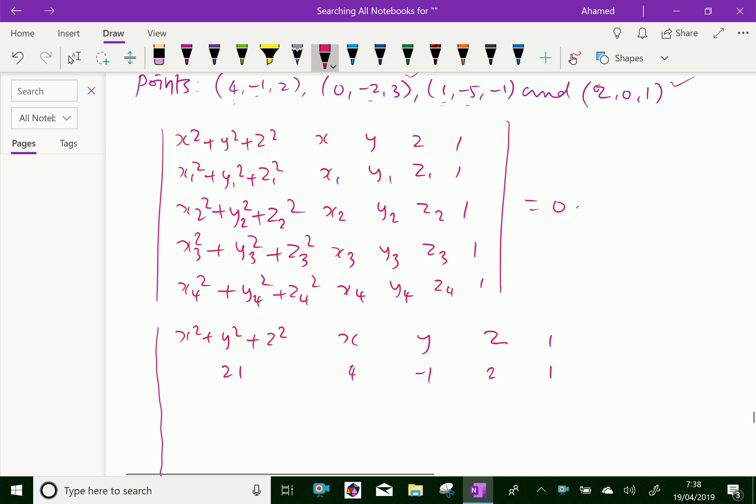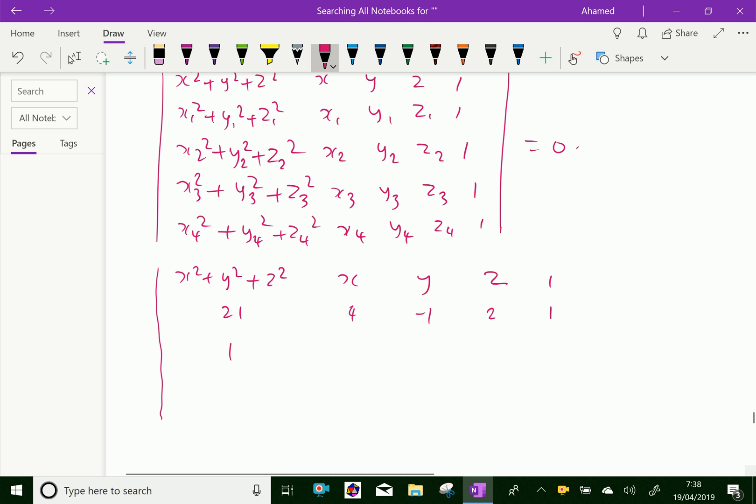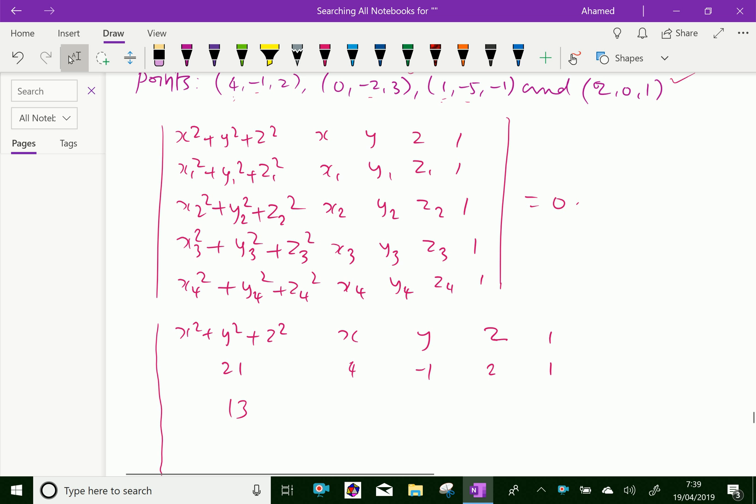Then the second point, that is your x₁, 4² is 16, 16, 17, and 21. Then the next point is 0², 2² is 4, 4, and 9, 13. And here x₂, y₂, z₂, that second, third point is x₂, y₂, z₂, that is here 0, -2, 3, and 1.